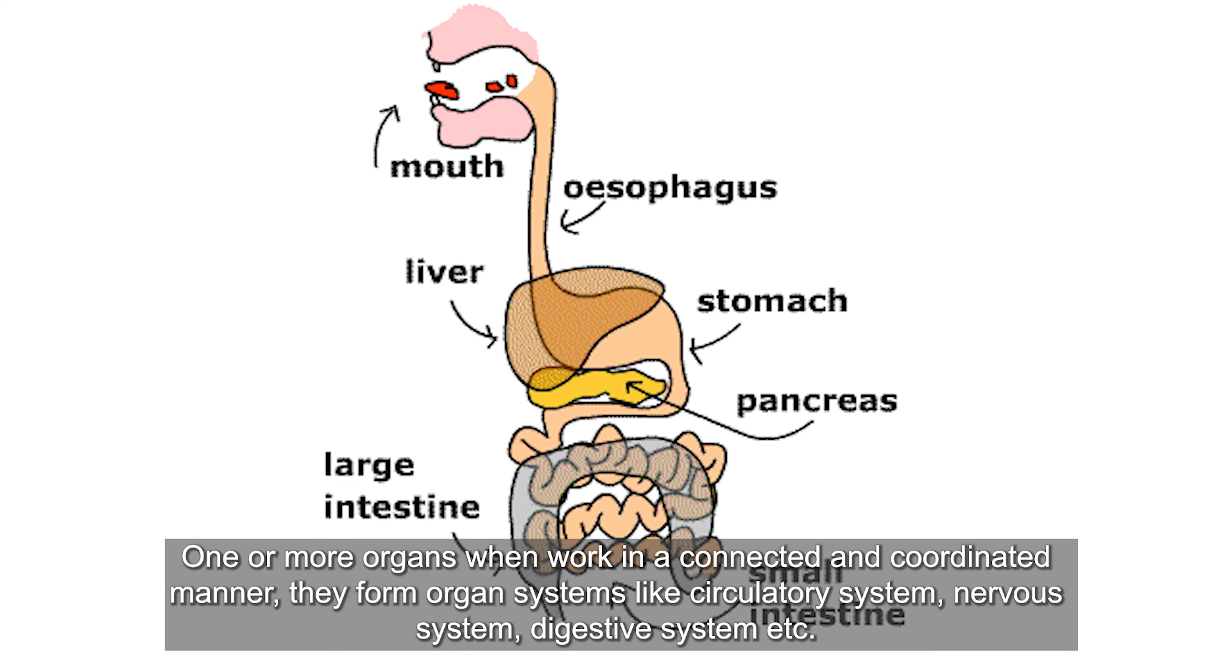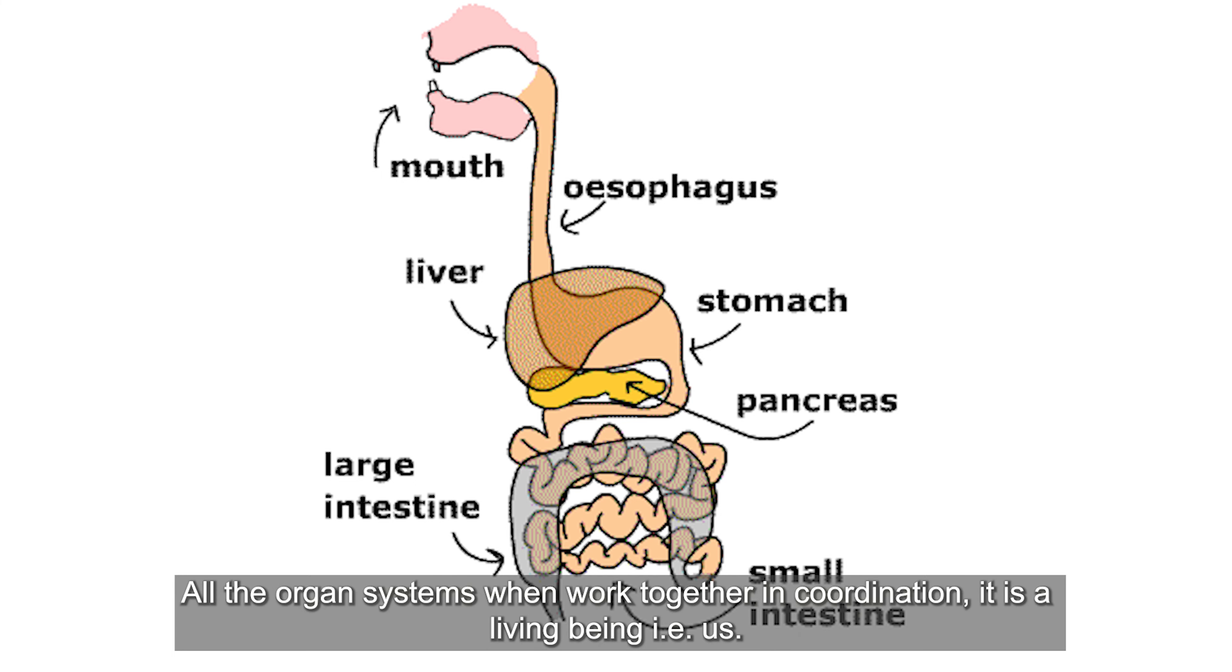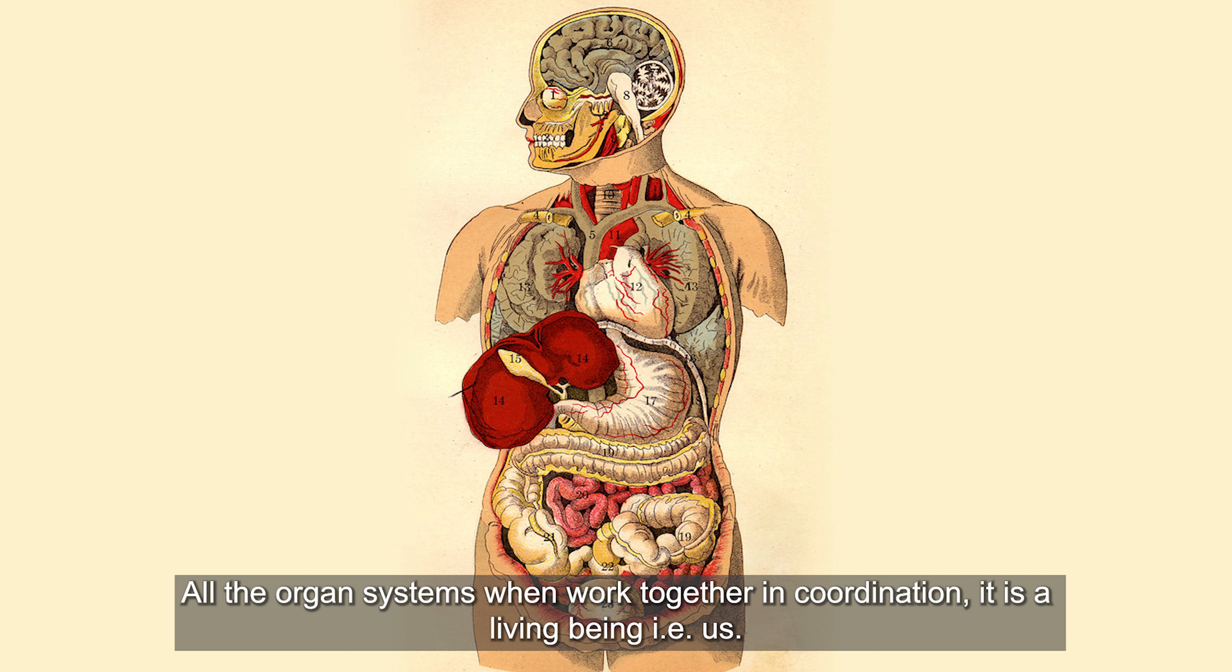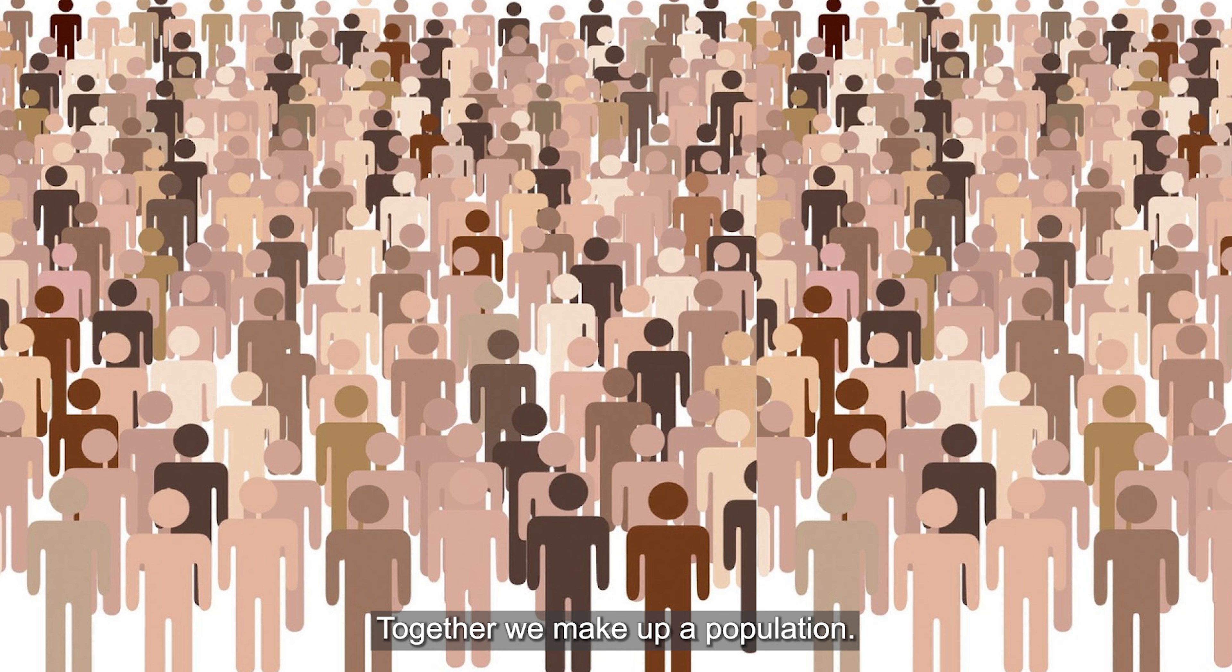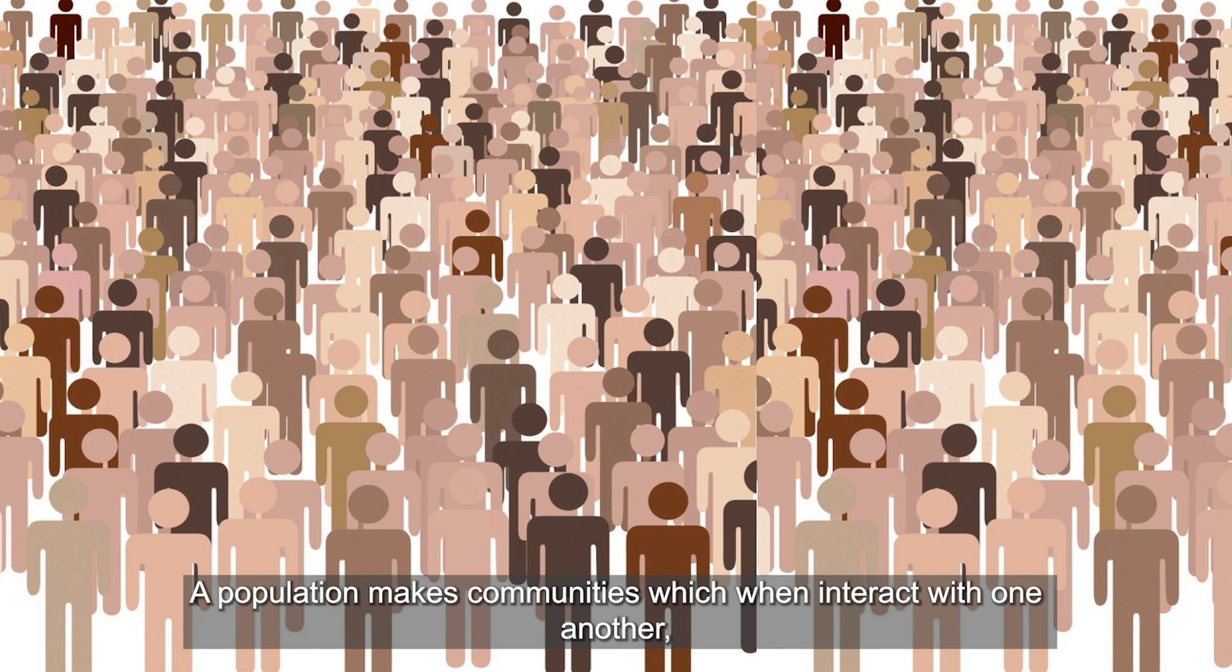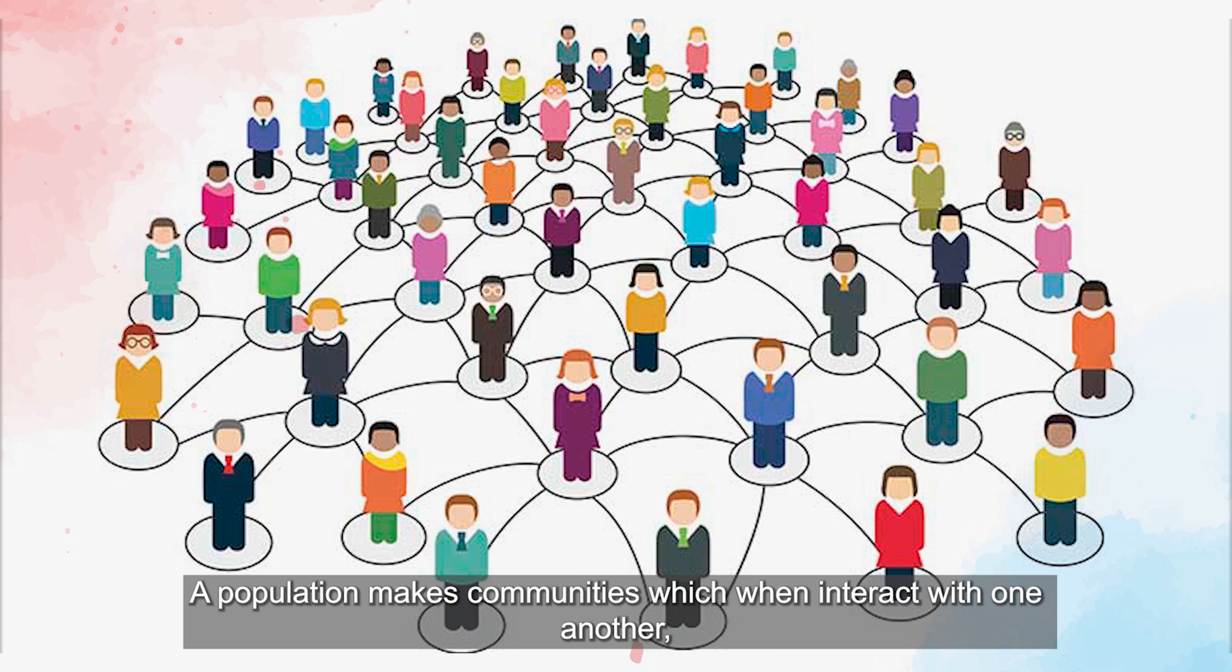And one or more organs when work in a connected and coordinated manner form organ systems like circulatory system, nervous system, digestive system, etc. And all the organ systems when work together in coordination, it is a living being—that is us.